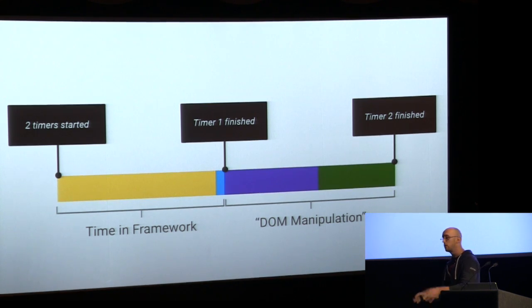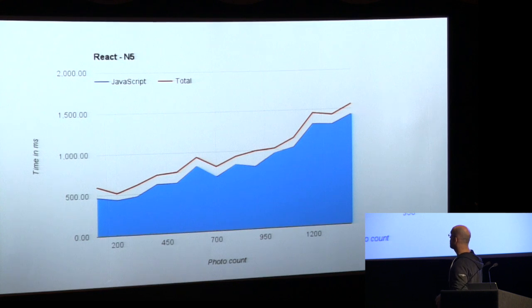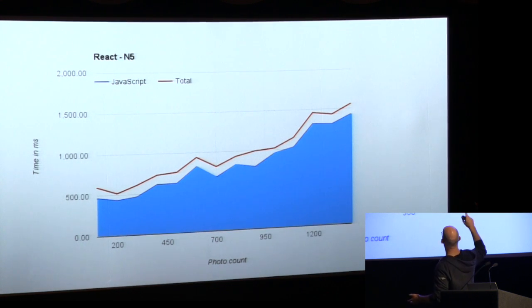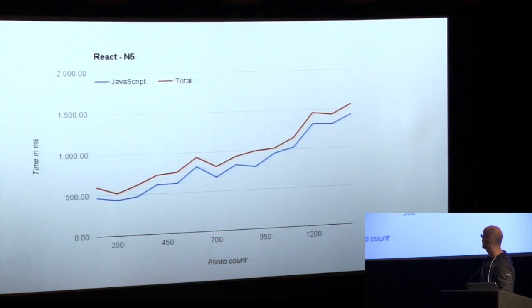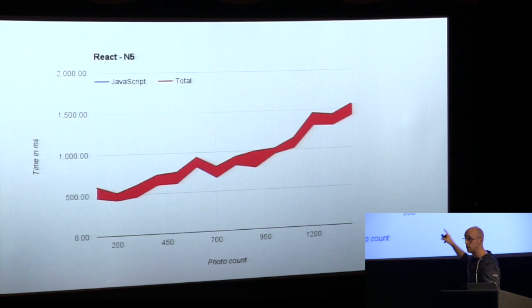Here's what I got on a Nexus 5 — because mobile is the future, let's see what it does. This blue bit is the time in JavaScript. As the number of elements goes up, it starts at around 500 milliseconds just to do the JavaScript — the tree-diffing bit. As the photo count goes up to about 6,000 elements, it was one and a half seconds just to do the JavaScript bit. But the DOM mutation time — that bit between the first and second timer — looks like a pretty solid band. The claim was that bit should be expensive, and the JavaScript bit should be cheap. No.